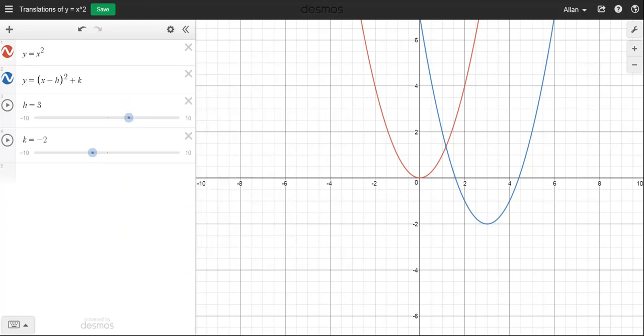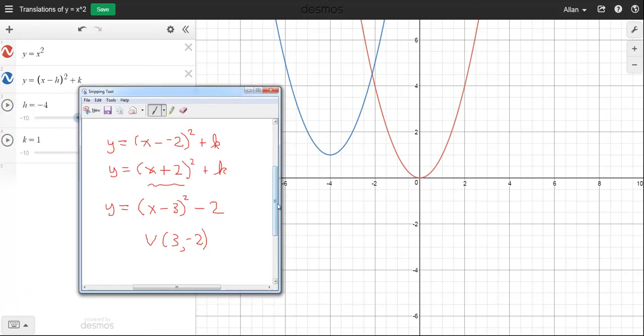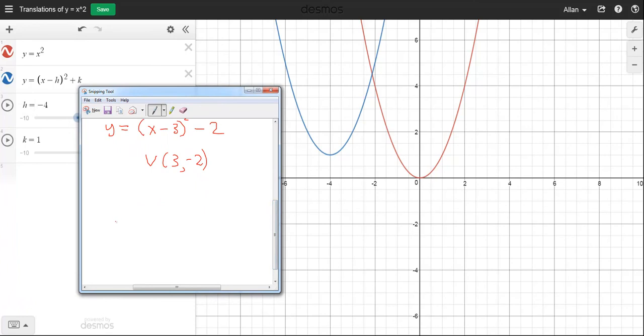So let's do one more. So let's make h, let's say negative four. And let's make k, make it one. So let's go back here again. Maybe we'll scroll down, give us more room.